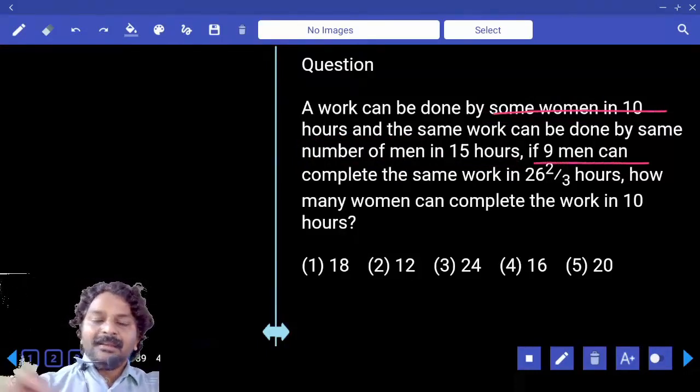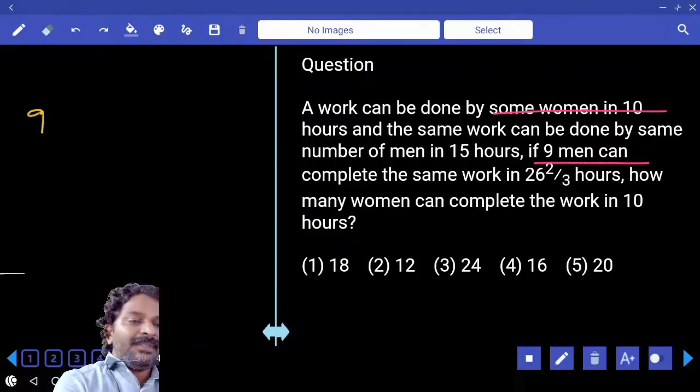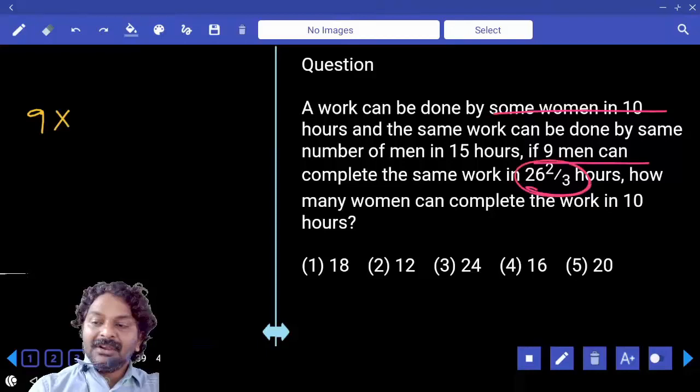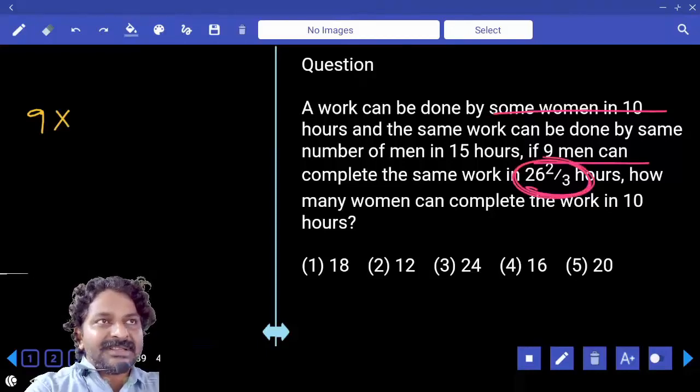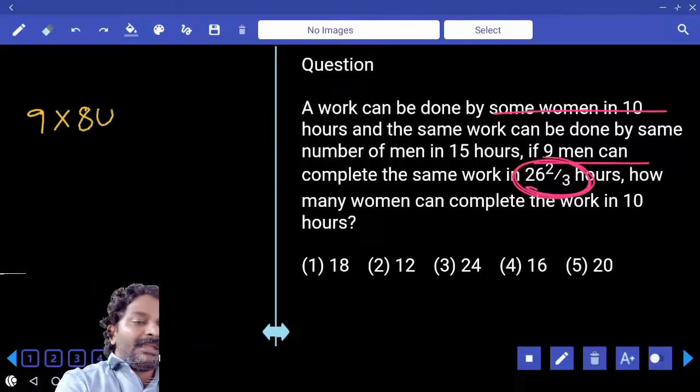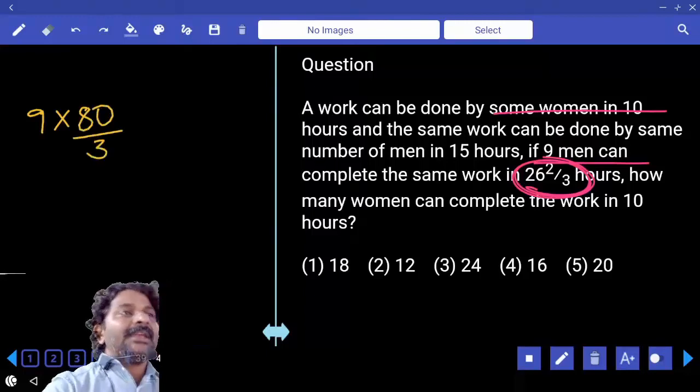Now, here complete information wise, 9 men are there and they can complete the work in 26 2 by 3 and what is the number? 80 by 3. 9 men can complete the work in 80 by 3 hours, correct?